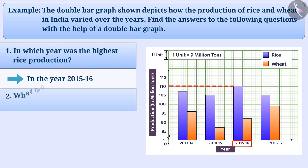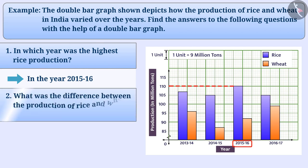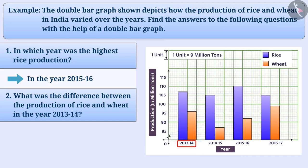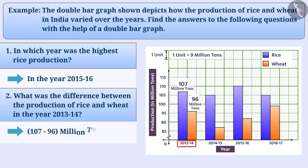What was the difference between the production of rice and wheat in the year 2013-2014? We see that in the year 2013-2014, rice production is 107 million tons and wheat production is 96 million tons. There is a difference of 107 minus 96 million tons, that is 11 million tons in the production of both.